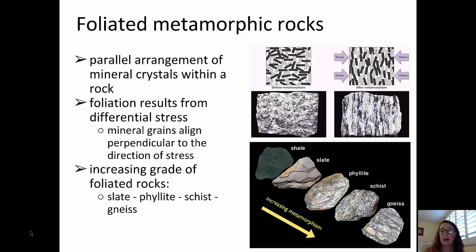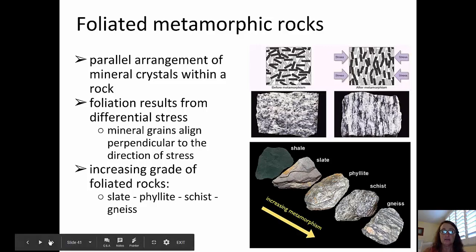The first rock shown is not metamorphic — that's a sedimentary shale. The lower grade metamorphic rocks are then slate, increasingly higher grade phyllite, schist, and finally gneiss.